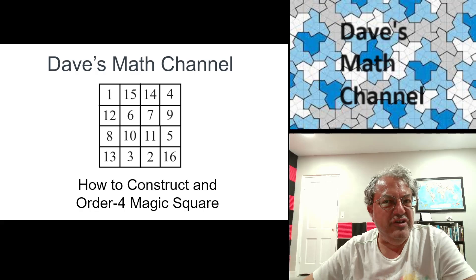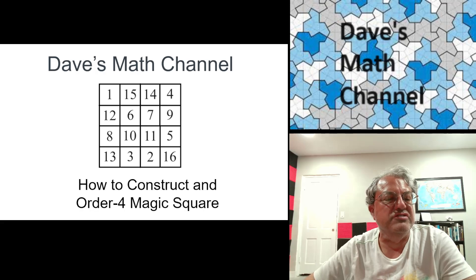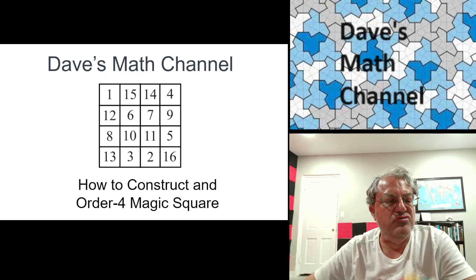You guys seem to really like my series on magic squares, so here's a video on how to construct an order-4 magic square. About a month ago I talked about constructing magic squares of arbitrary odd order.